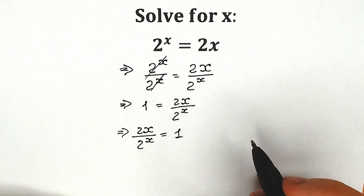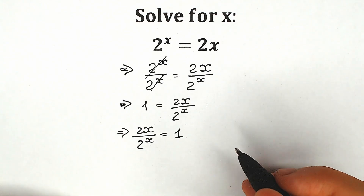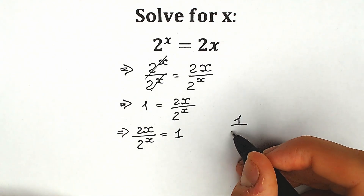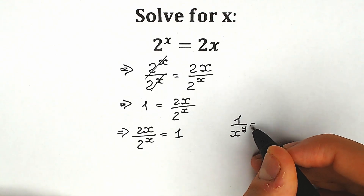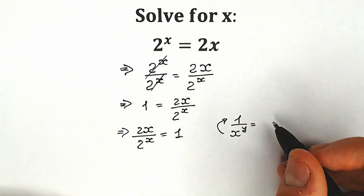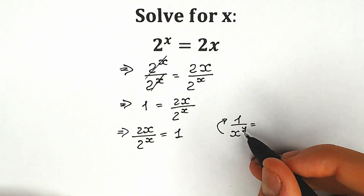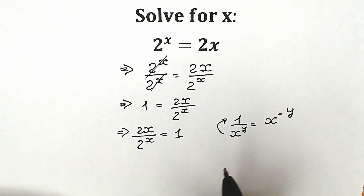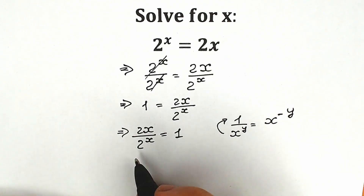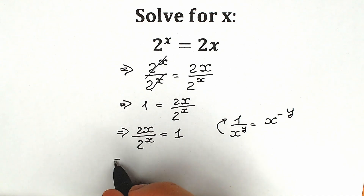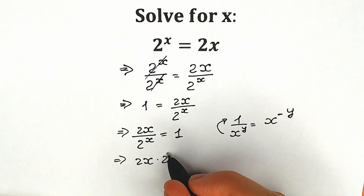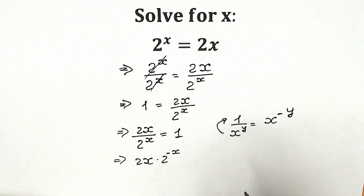Right now we need to know a really easy property with powers. When we have 1 over x to the power y, we can write this as x to the power negative y in the numerator. Let's apply this property here to 2 to the power x — we write it as 2x times 2 to the power minus x, according to this property.